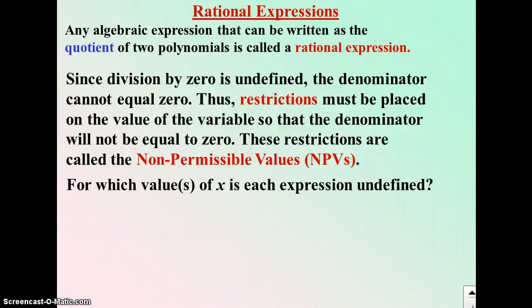For which values of x is each expression undefined? A little review: for 1 over 4x, x can never equal zero. For 1 over x minus 5, the non-permissible value written as the restriction is x cannot equal 5.